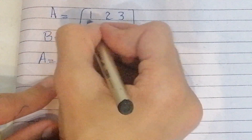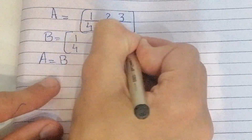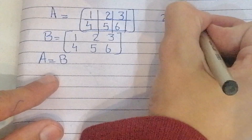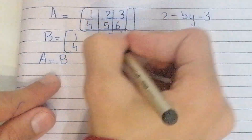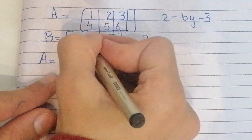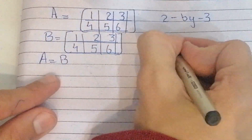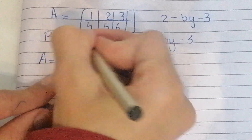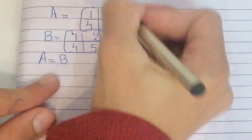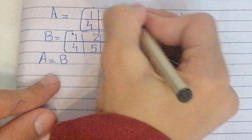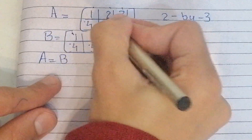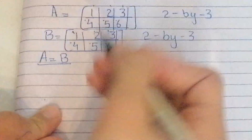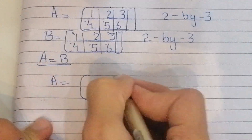They are equal because their order is the same — 2×3 for both matrix A and matrix B. Also, their corresponding entries are the same: first entry 1, second entry 2, third entry 3 in the first row, and 4, 5, 6 in the second row. So both matrices are called equal.